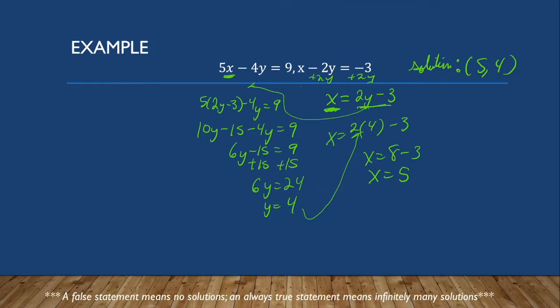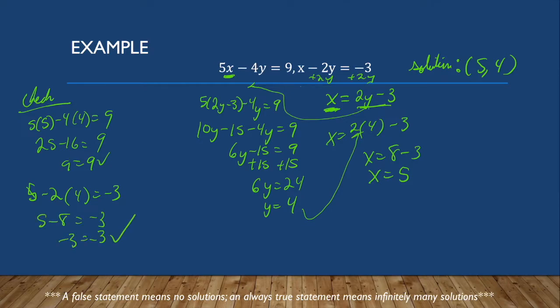I can check my answer by substituting back in. Let's do that. 5 times 5 minus 4 times 4 is 9. 25 minus 16 is 9. 9 is 9, I agree with that. Next, 5 minus 2 times 4 is negative 3. 5 minus 8 is negative 3. I also agree with that. So we found the correct solution.